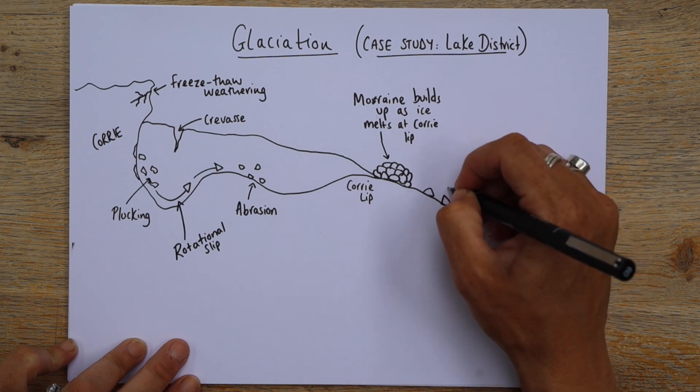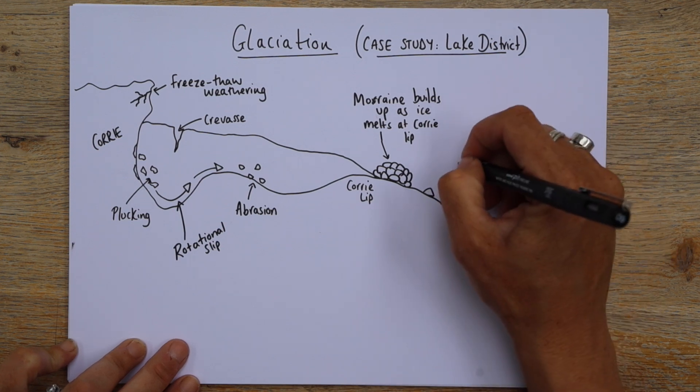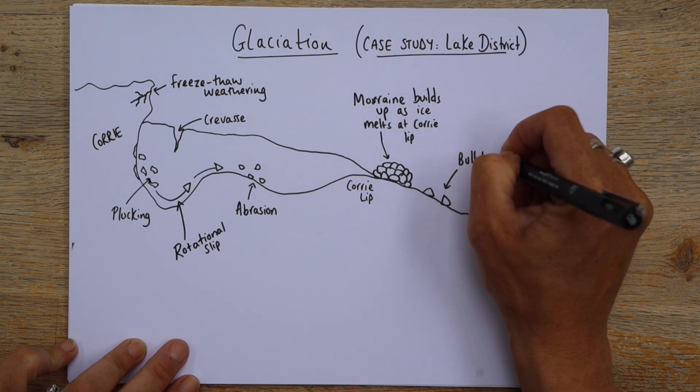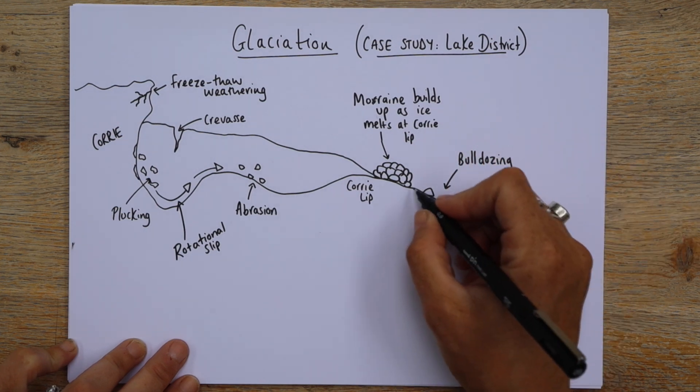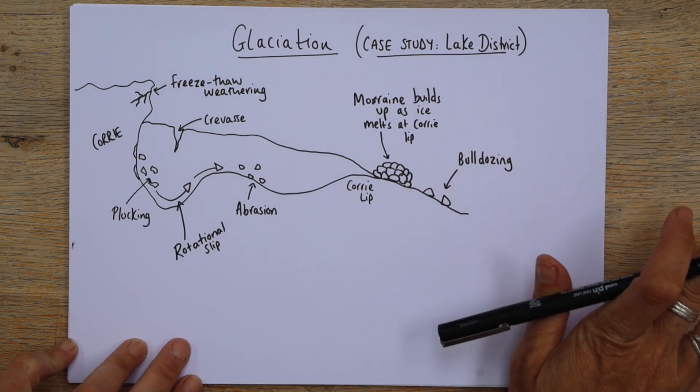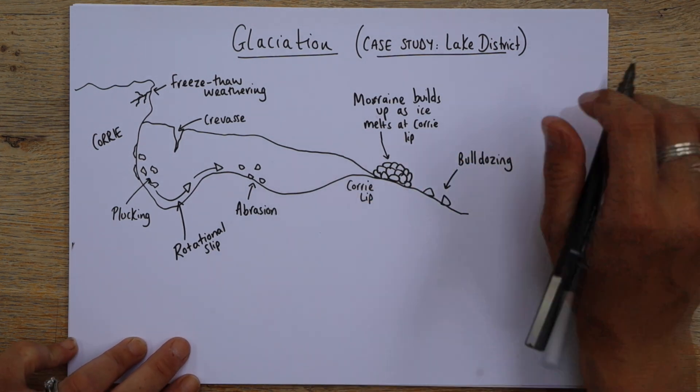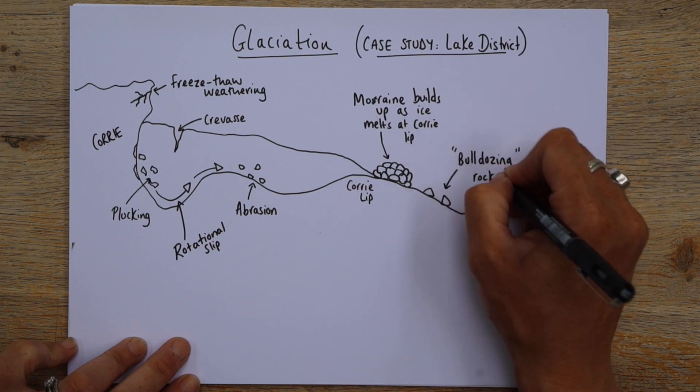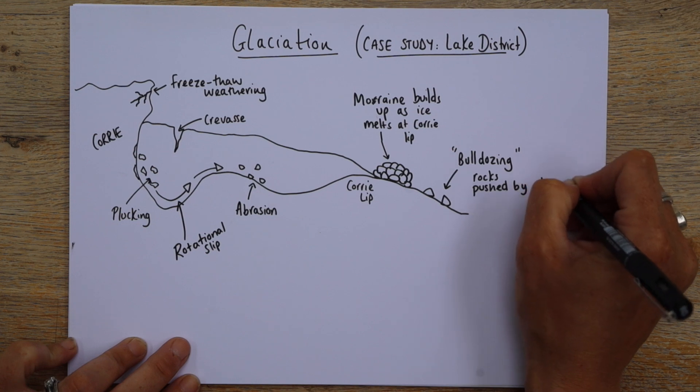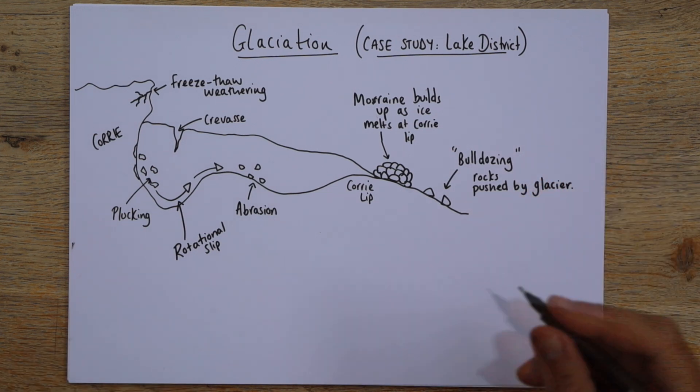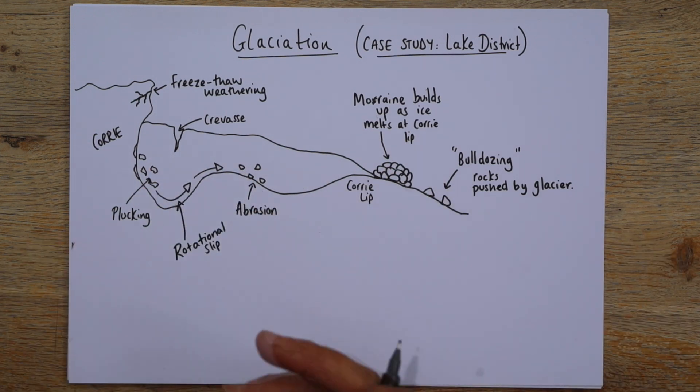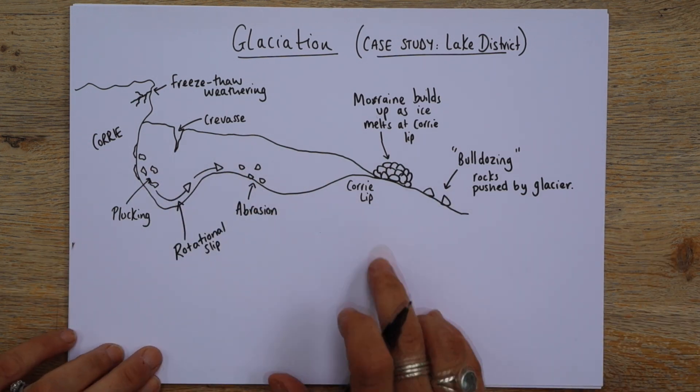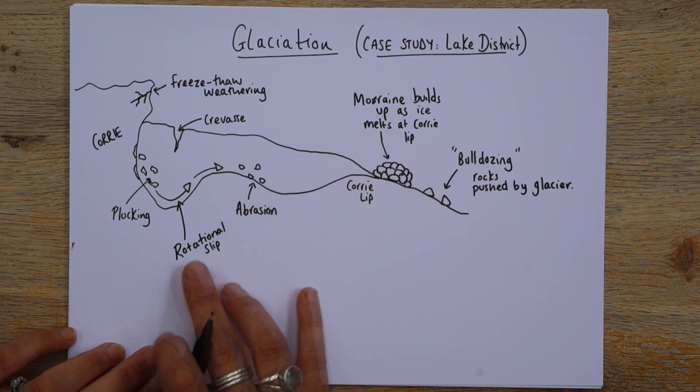Now, probably the easiest one to remember. These are quite cute actually. You can also get something called bulldozing, which is rocks that are pushed forward by the ice. A bit like a bulldozer pushes things forward. So yeah, bulldozing rocks pushed by glacier. Here we go. So this is kind of the movement and what's happening and some of those keywords that you need to know. So we've got the Cori lip. Yeah, got the moraine. That's perfect. Right.